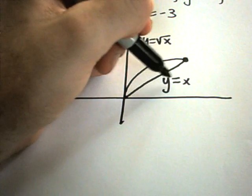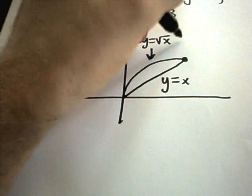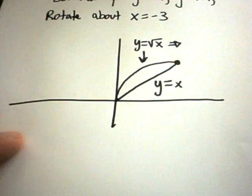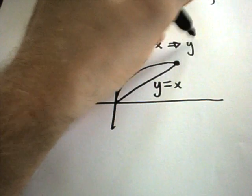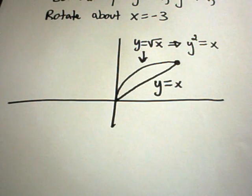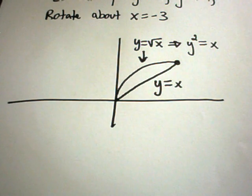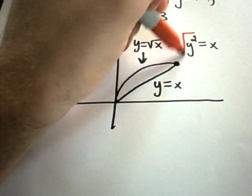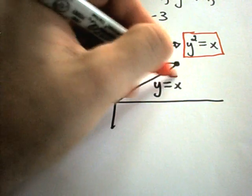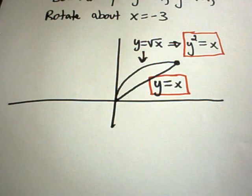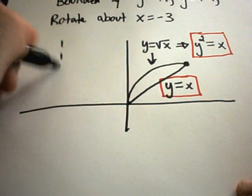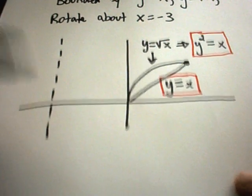Well, we've already got the x isolated on the bottom one. I'm going to tweak the square root function and rewrite that as y squared equals x. Those are the things that are going to go inside of my integral. And now the same thing. The line I'm rotating about is over here at negative 3. So here's the line x equals negative 3.